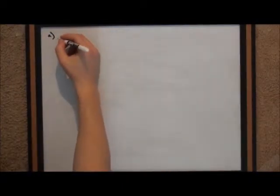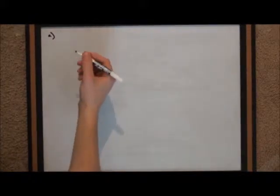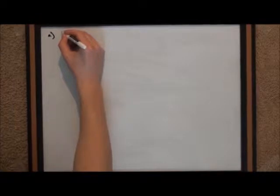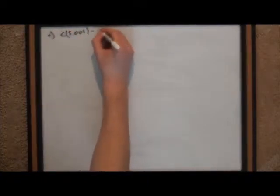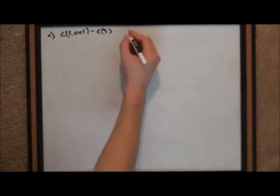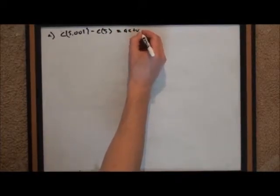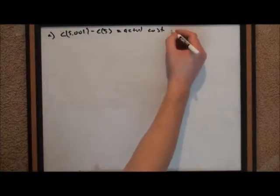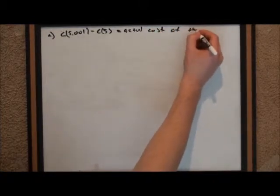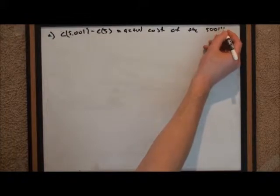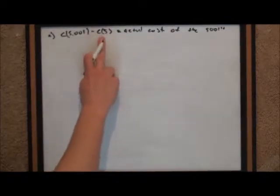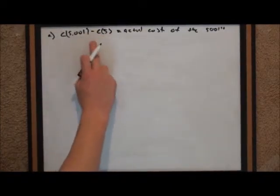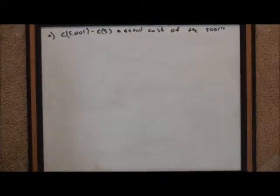The second part of Part A is finding the actual cost of the 5,001st item. To get this we calculate C(5.001) minus C(5), which gives us the actual cost of the 5,001st item — because C(5.001) is the cost of producing 5,001 items and C(5) is the cost of producing 5,000 items. The difference of the two gives us the cost of the 5,001st item.